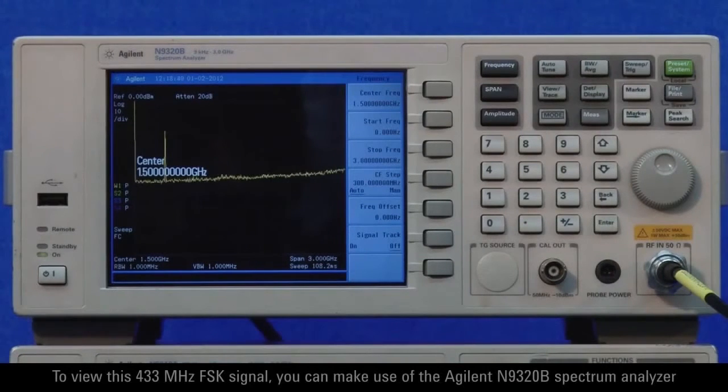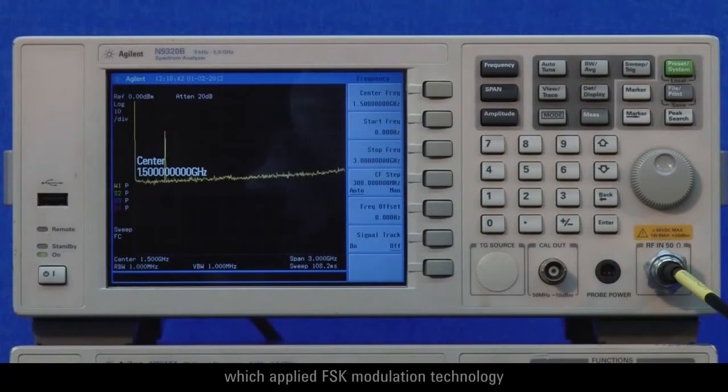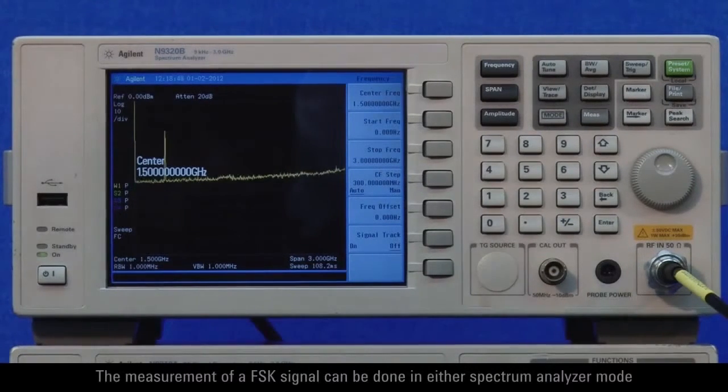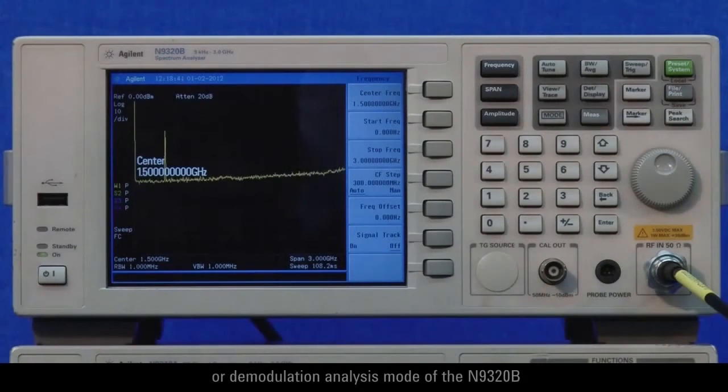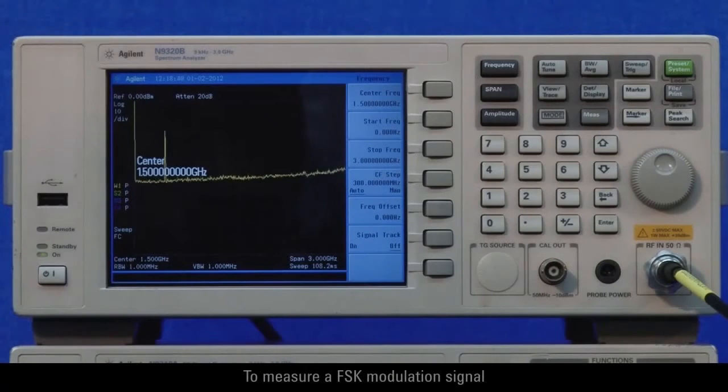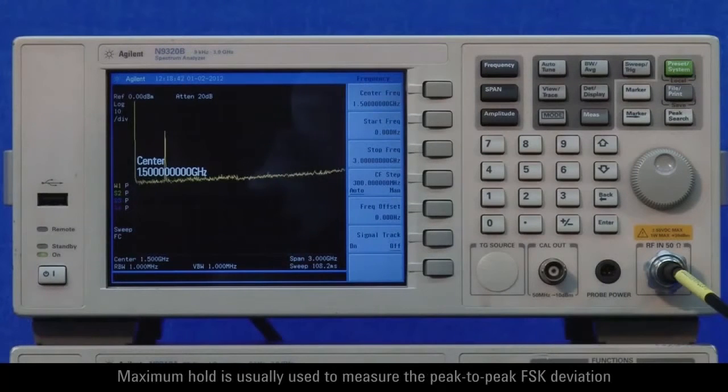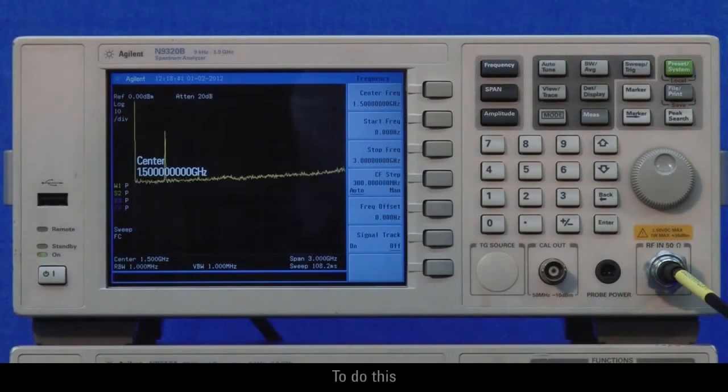To view this 433 megahertz FSK signal you can make use of the Agilent N9320B spectrum analyzer. The Agilent N9320B is a perfect fit for testing low power RF devices which applied FSK modulation technology. The measurement of a FSK signal can be done in either spectrum analyzer mode or demodulation analysis mode of the N9320B. To measure a FSK modulation signal you might use the spectrum analyzer mode in the traditional way.